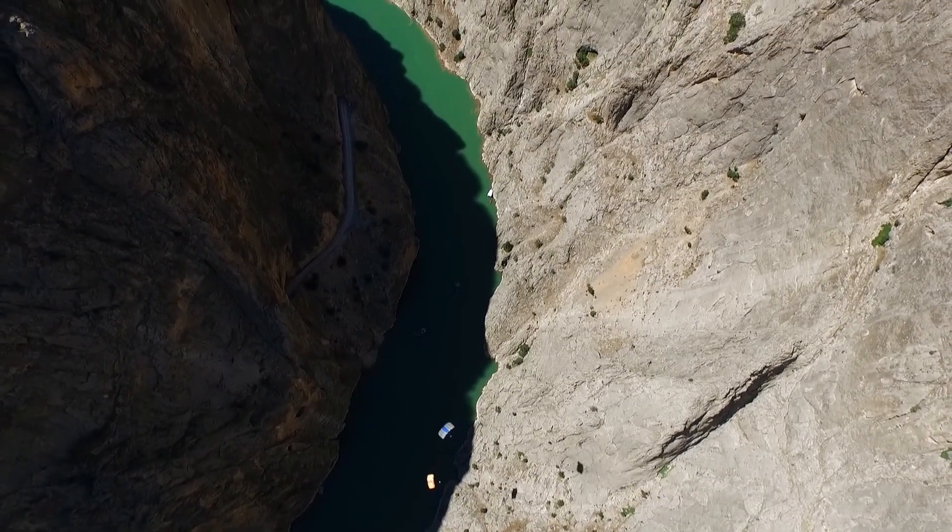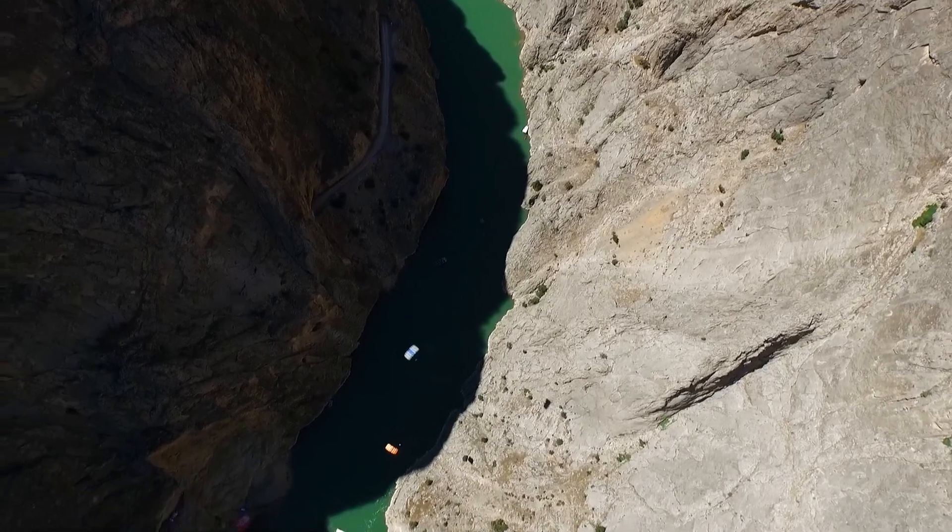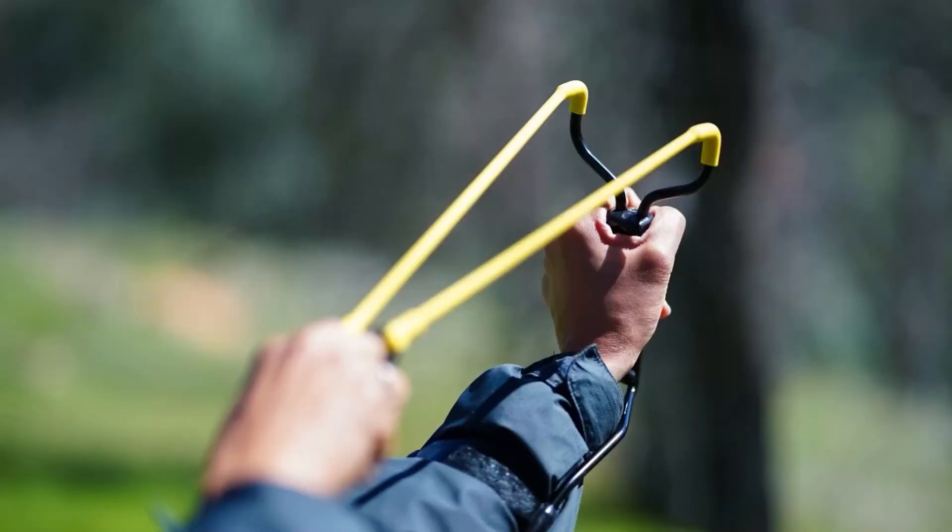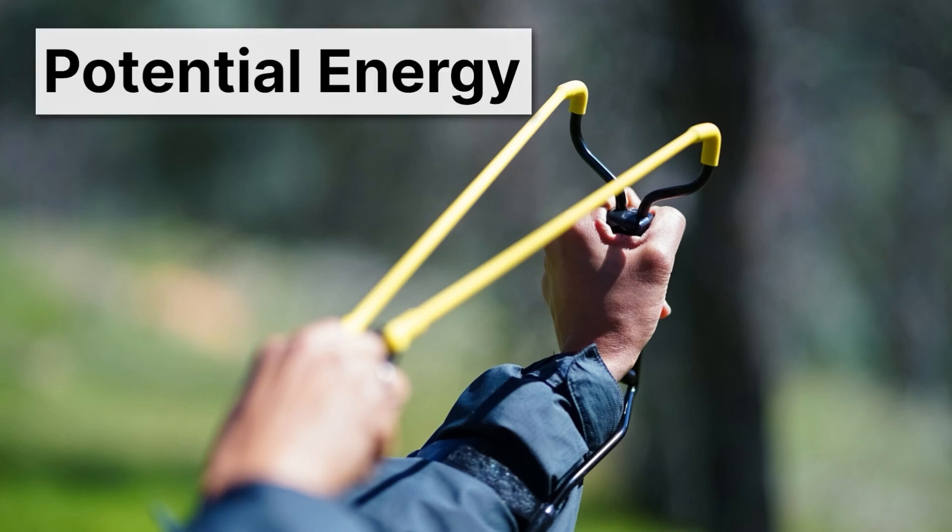Let's take a closer look at this potential energy. Here, we have another example. A slingshot pulled back. And again, we can kind of see that it's an unstable situation. If I just barely let go, the rock will fly forward. And so this also is potential energy.